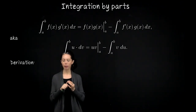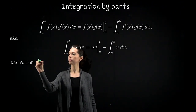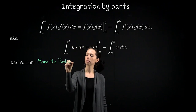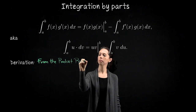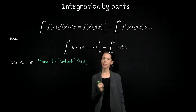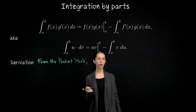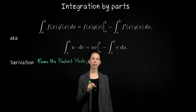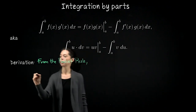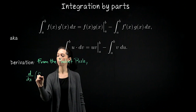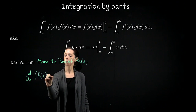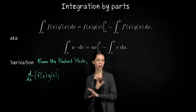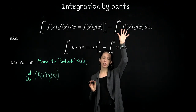The derivation is straightforward — it comes right from the product rule. If you haven't seen this before, you might want to pause and write down d/dx of the product f of x times g of x, see what you get, rearrange terms, take integrals, and try to arrive back at the integration by parts formula.